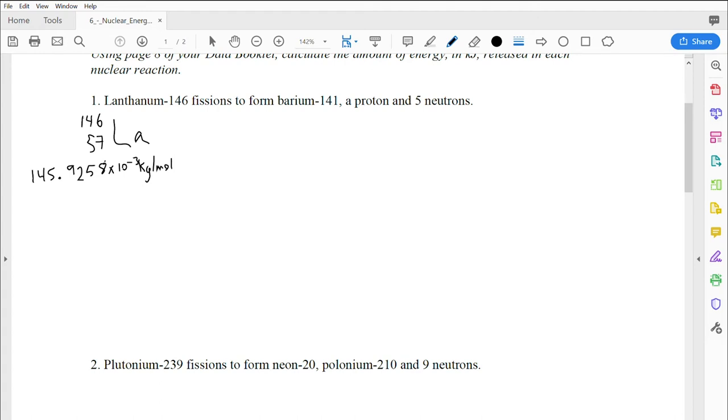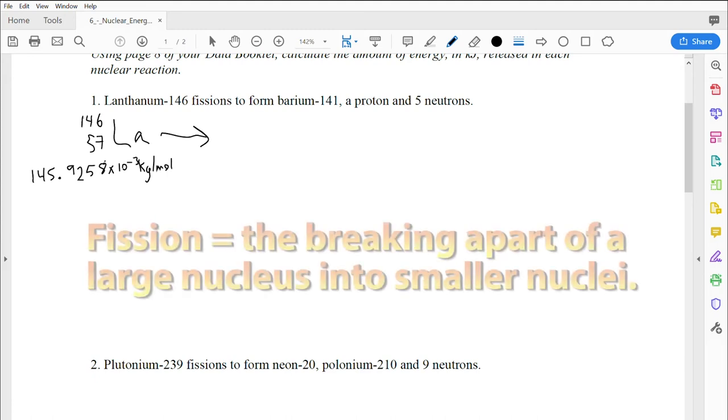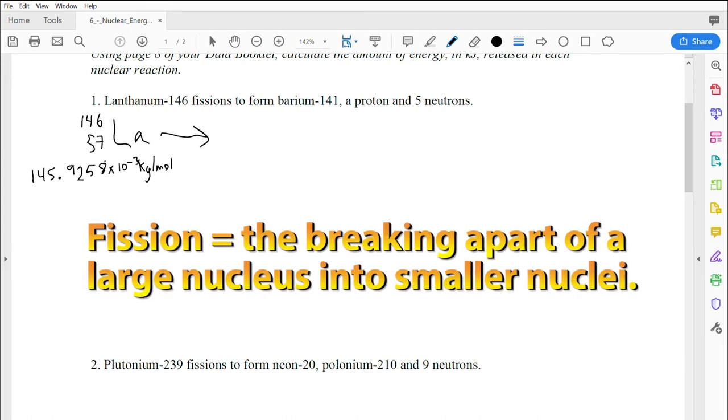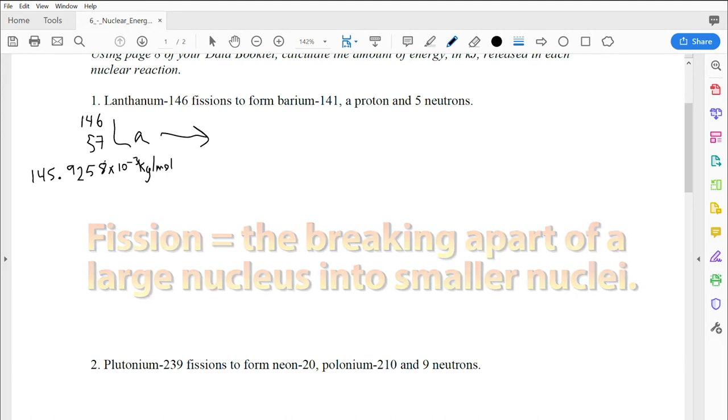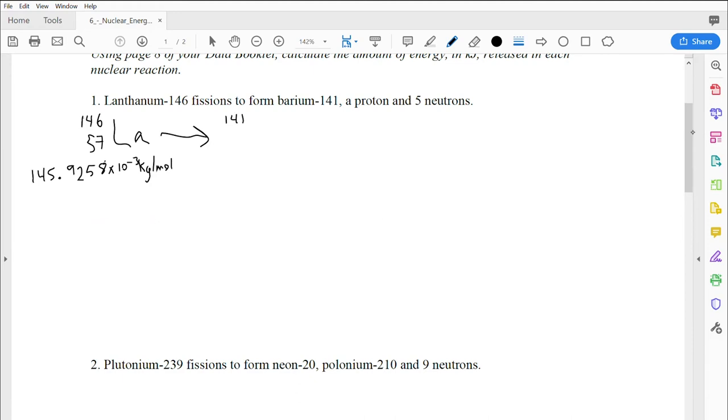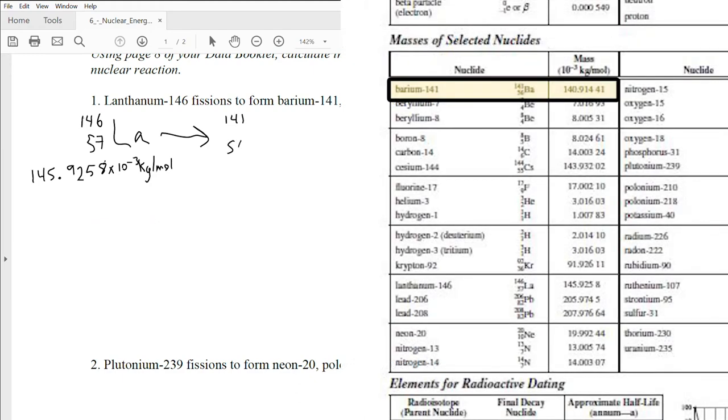I'm going to write that number down as well. Now this compound says it's going to fission, so that means it's going to break apart into barium-141. That's right at the top of the table on page 8. I'm going to copy that out, and I'm also going to write down the mass of it. Be careful when you do this. You want to try to get those masses exactly right.